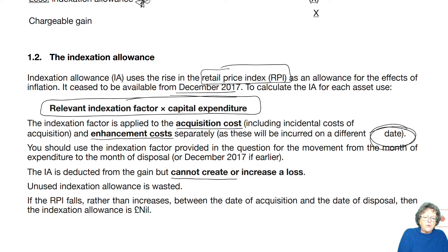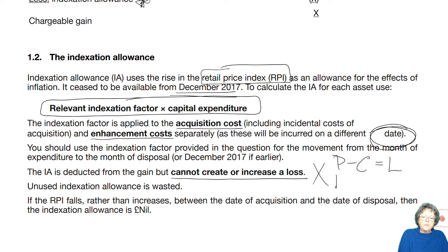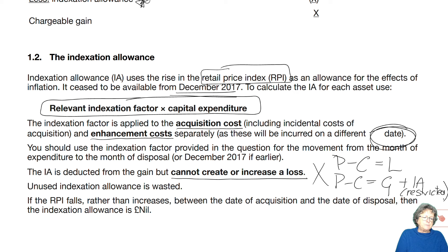Indexation cannot create or increase a loss. So if your proceeds minus cost equals a loss, you will not get indexation allowance. If your proceeds minus cost equals a gain and your indexation allowance is more than the gain, you only get it restricted. We're going to have a look at some examples of how that works.